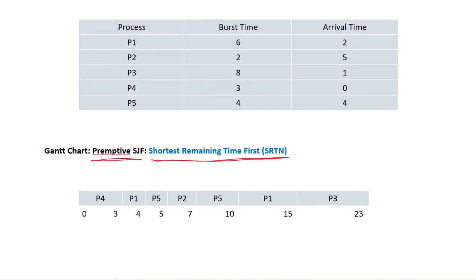When we take this example, these things will be more clear. First, let us see what is the status at time 0. There is only one process which has arrived at time 0 in the system, which is P4. So P4 will be allocated the CPU and P4 will start running.